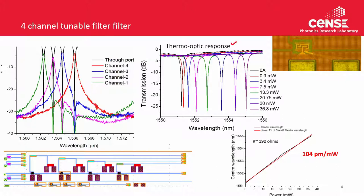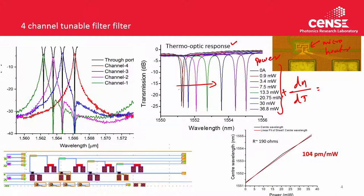It is possible to tune this response using the thermo-optic effect. Silicon has a positive thermo-optic coefficient, so when you apply heater power via a micro-heater, you can change the resonant wavelength. A change in electric power produces a linear change in the central wavelength. This gives a tuning option: you can choose whichever channel you want to pick up, or correct for any fabrication imperfections in the wavelength filters.